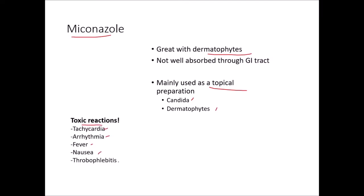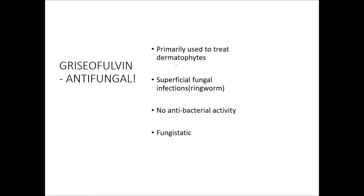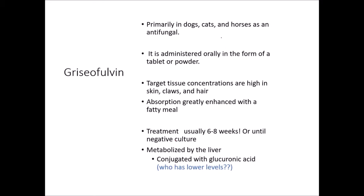Griseofulvin is an antifungal primarily used to treat dermatophytes and superficial fungal infections like ringworm. It has no antibacterial activity and is fungistatic. It's used in dogs, cats, and horses, often known as Fulvicin. Administered orally as a tablet or powder, it has high target tissue concentrations in skin, claws, and hair. Absorption is greatly enhanced with a fatty meal, so in horses we may use an oil like olive oil. Treatment is usually six to eight weeks or until a negative culture. It is metabolized by the liver and conjugated with glucuronic acid, so caution is required when using griseofulvin in cats, which have lower levels of glucuronic acid.